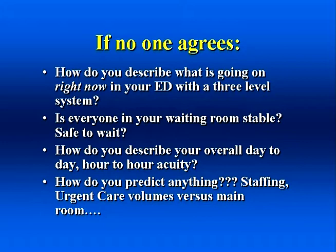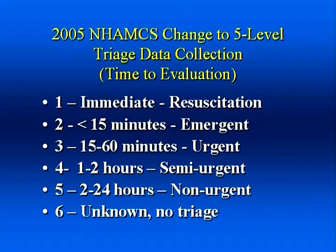How can you make critical decisions like when to go on bypass? You don't really know who is and who is not stable in your waiting room. You can't describe your acuity on a day-to-day or hour-to-hour basis. And you certainly can't predict staffing needs or urgent care hours or anything else. So, it is time for five-level triage. The CDC has also recognized this. Beginning in 2005, the NHAMCS survey will collect data using a five-level, not a four-level, system.